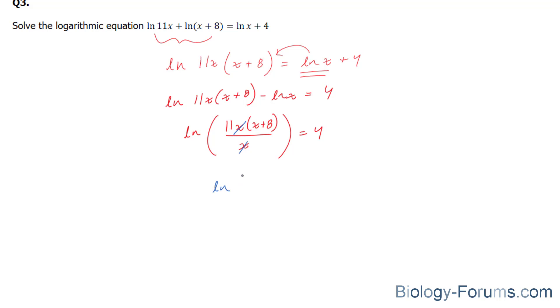So you're left with ln(11(x + 8)) = 4. Now, another reason why that was special is because now you can raise both the left and the right side to the base of e. And what that does is it cancels out, leaving us with this. 11(x + 8) is equal to e to the power of 4.